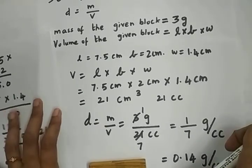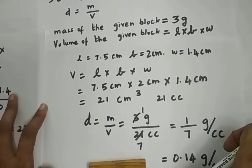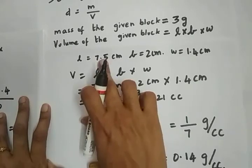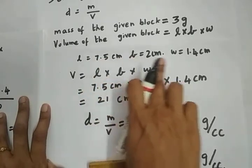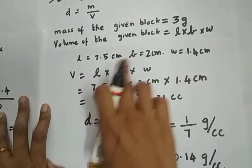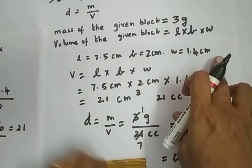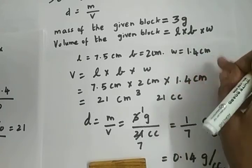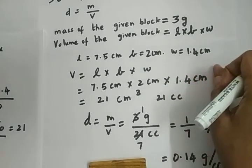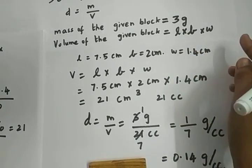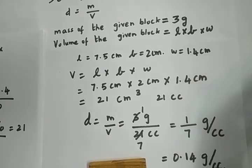To summarize: just find the mass, then find the volume by finding the product of the three dimensions — length into breadth into width. We will learn how to find the density of an irregular solid in the next video. Thank you.